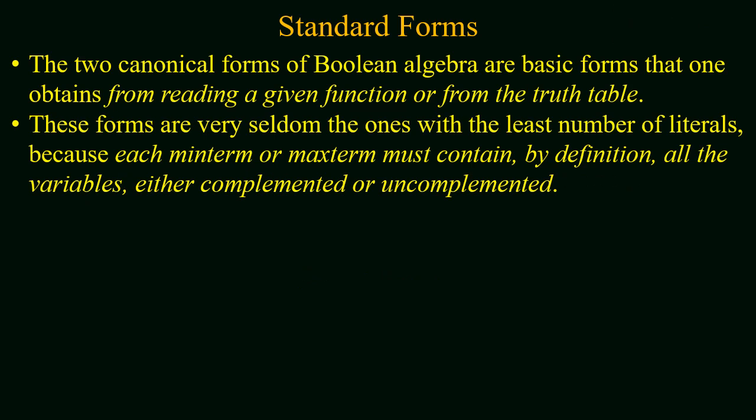So far we have studied two canonical forms: sum of product and product of sums. These two canonical forms of Boolean algebraic expressions are the basic forms obtained from reading a given function or from the truth table. These forms are very rarely used with least number of literals because each minterm or maxterm by definition must contain all the variables either in complemented or uncomplemented form.